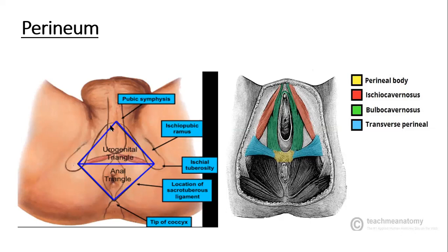In this view, we have to learn the boundaries of the perineum. Anteriorly, there is the pubic symphysis. Posteriorly, the tip of the coccyx. Laterally, the perineal compartment is bounded by the inferior pubic ramus, along with the ischial ramus and the sacrotuberous ligament.